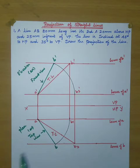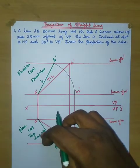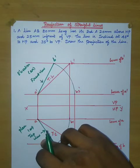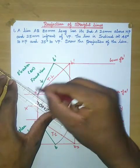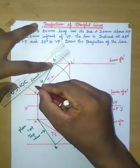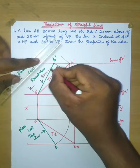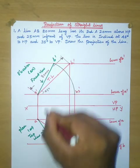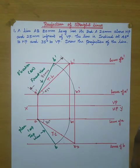With the help of the given data, we have drawn the projection of the straight line — the front view, top view, and true length. This is the projection of straight lines. If you like the channel, please subscribe. Thank you.